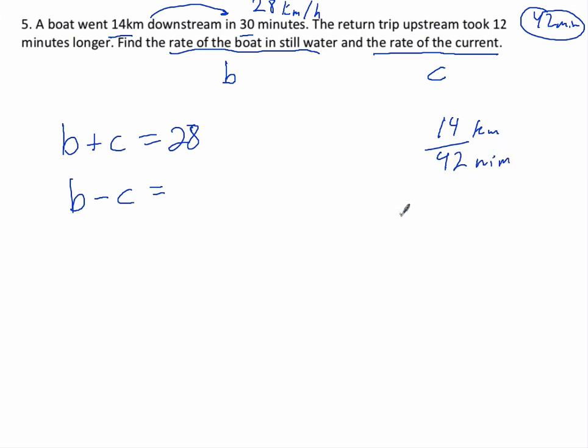Okay, so we can do 14 over 42 times 60 to get the rate of kilometers per hour. And that's not too bad, actually, because these are both divisible by 7. So that's 2 over 6 or 1 over 3 times 60, which is 20 kilometers per hour. So it's 20 kilometers per hour upstream.